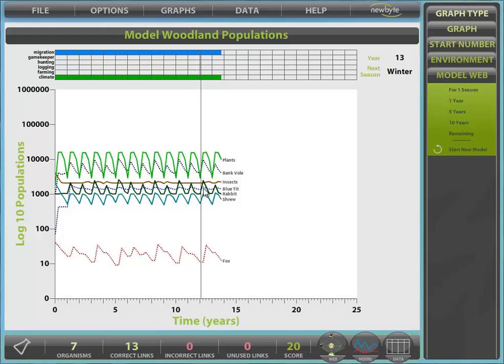From the ModelWeb panel, select Remaining to model our web for the full 25 years. We can stop the model at any time by selecting any model button. Here the year and next season are displayed together with the environmental conditions. This model section of the simulation is very powerful and models your web and not some theoretical one.